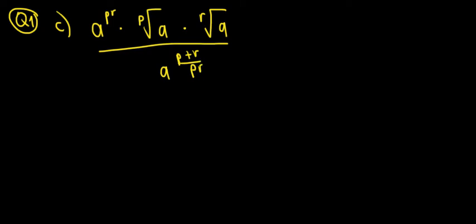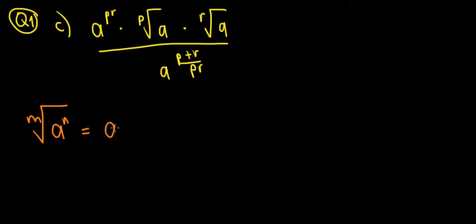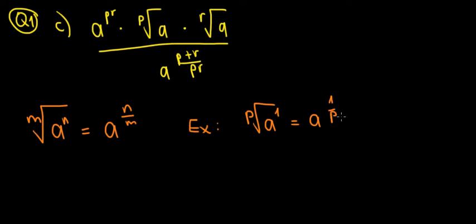Before going any further, let's write some formulas to remind ourselves how to use the power rules. The useful formula here is: the m-th root of a to the power n equals a to the power n over m. In our case, p root of a is the same as a to the power 1 over p, since a equals a to the power 1.